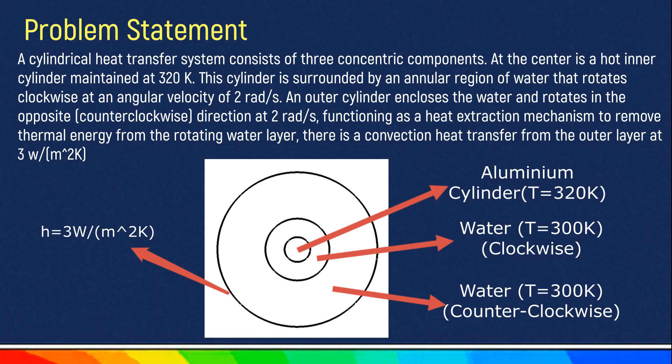There is a convective heat transfer from the outer surface of this outer cylinder at a heat transfer coefficient of 3 Watt per m² Kelvin. We need to find out the heat transfer from this inner hot cylinder and the variation of temperature throughout these cylinder regions.